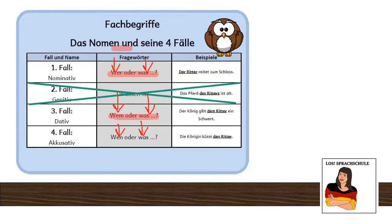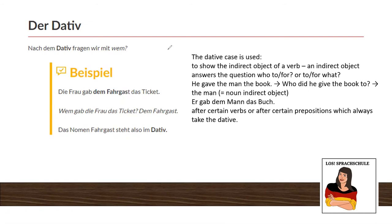So back to Dativ. The Dativ case is used to show the indirect object of a verb. An indirect object answers the question 'who to' or 'who for' or 'to what' or 'for what'. For example: 'He gave the man the book.' The nominative is definitely the 'he' — the person who does the action. But of course we have two objects here, and we see immediately to whom does he give the book. Of course to the man, 'dem Mann'. We can see it quite clearly — as I told you, if there is a person we can ask with 'wem', who to, to the man.